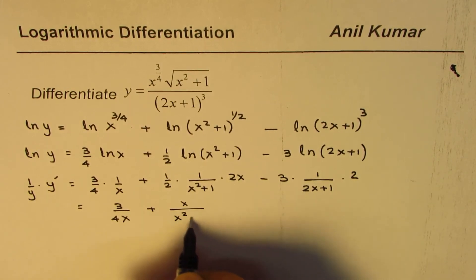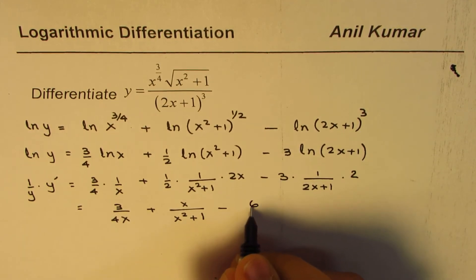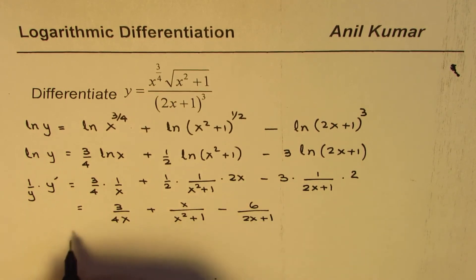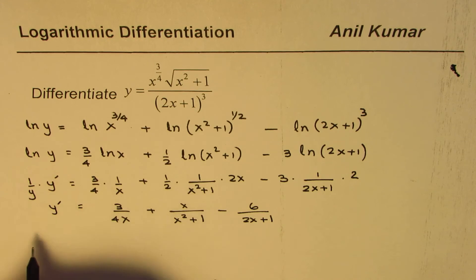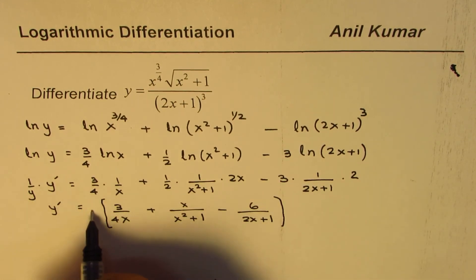...and here we have 3 times 2 as 6, so minus 6/(2x + 1). So y' will equal y times all this. I can write this as multiply by y.